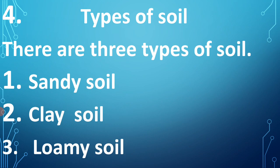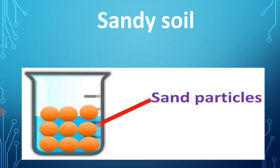Now let's see the different types of soil. There are three main types of soil: sandy soil, clay soil, and loamy soil. Sandy soil has particles that are big in size. It is a light and dry soil and cannot hold much water.